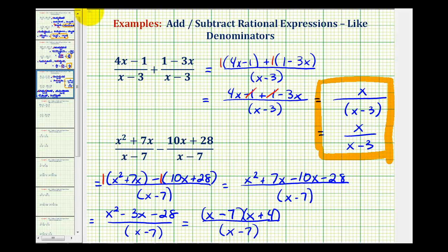And now that it's in factored form, we should notice we have a common factor between the numerator and denominator of x minus 7. x minus 7 over x minus 7 simplifies to 1. So this would simplify to the quantity x plus 4. And again, because we have one factor here, we could leave off the parentheses.